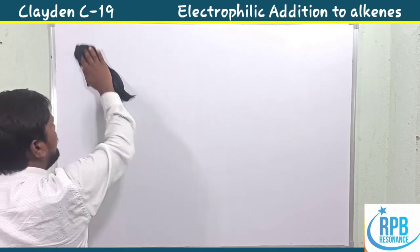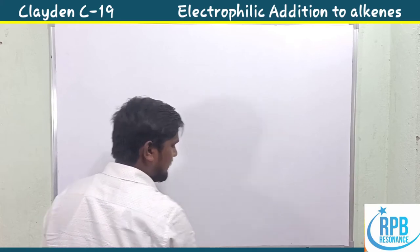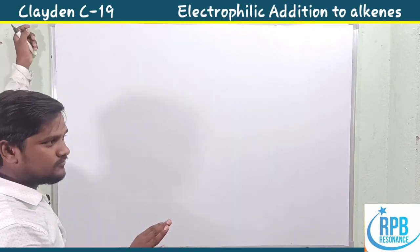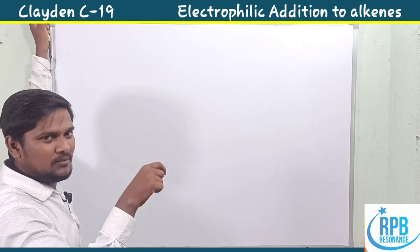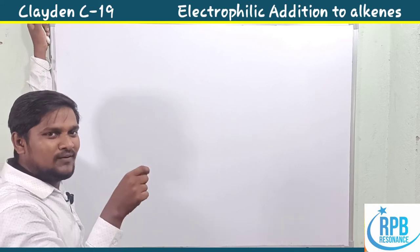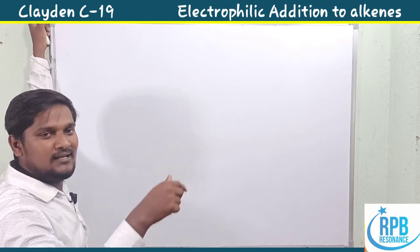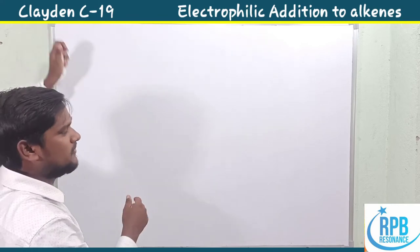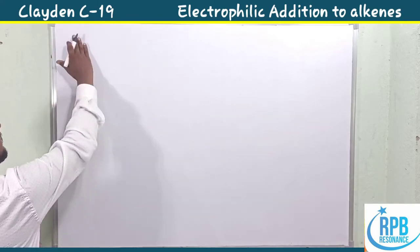Now we discuss the first one: opening of bromonium ions. In previous classes we discussed epoxide formation and bromonium ion formation, like electrophilic addition and dienes. Now let's move on to regioselectivity in the opening of bromonium ions.